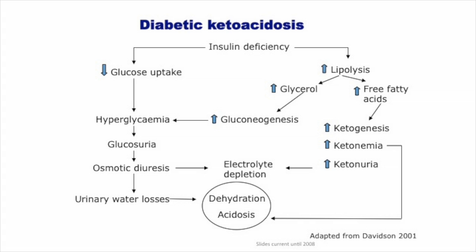As you give insulin and blood glucose begins to normalize, there is a shift of potassium from the extracellular back into the intracellular space. That's why if the potassium was 3.3 at the beginning and you give insulin without giving potassium, you are going to kill that person — because the potassium will shift from extracellular at 3.3 back into the cells, and there may be no detectable potassium remaining. Of course there is no autopsy finding that demonstrates hypokalemia.